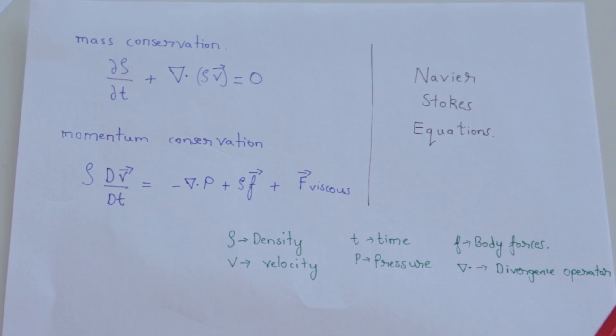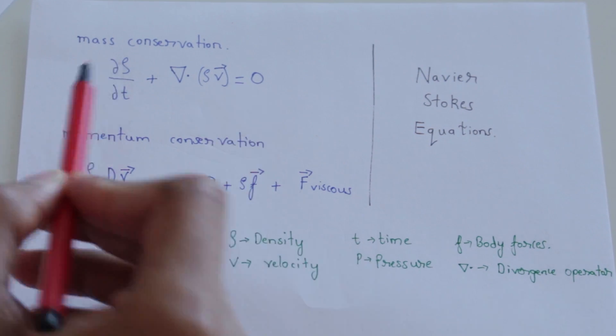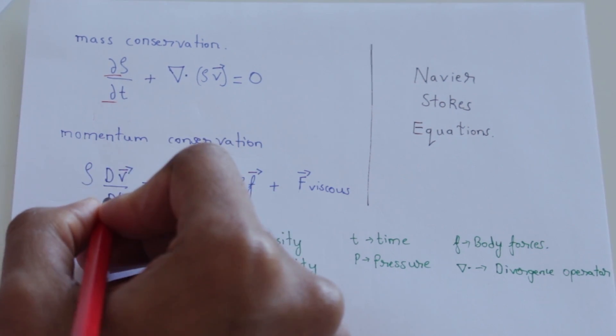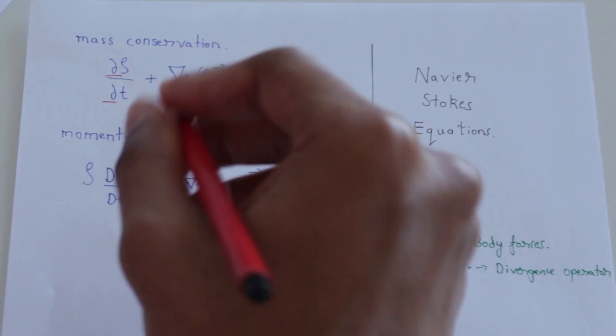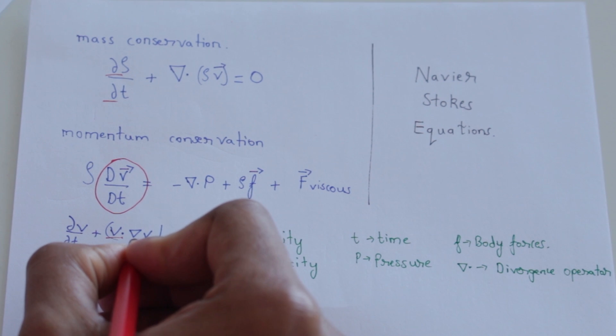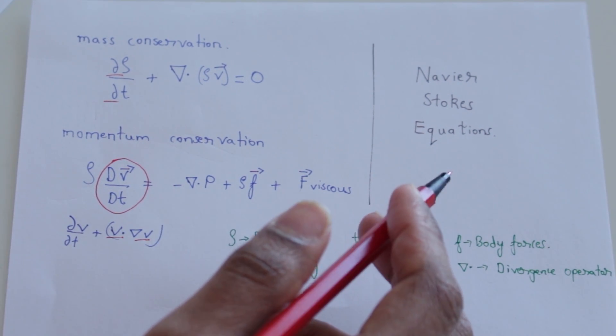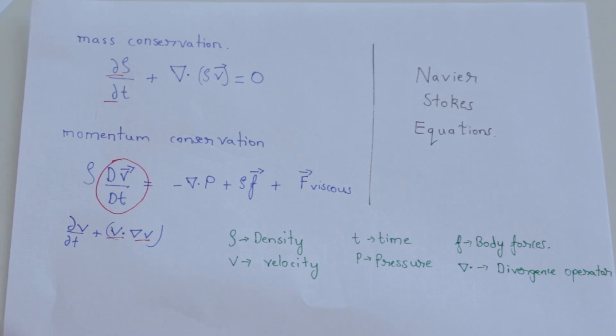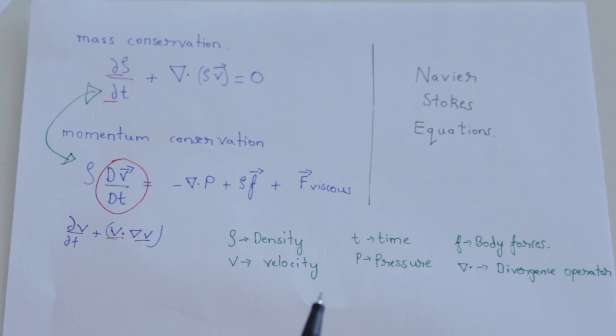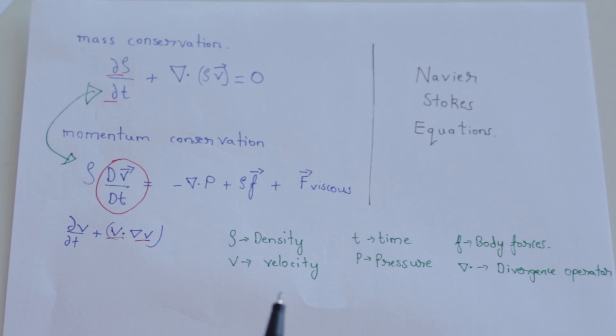Now there are some characteristics of these equations that you would observe just by looking at them. First, they are both partial differential equations. Now the momentum conservation equation, the term on the left hand side, can be expanded and written as, clearly you see that there are also some non-linearities in this equation. Another important characteristic of these equations is that both the mass and momentum equations are highly coupled, which means to solve any type of fluid flow, you need both the equations and you can't solve one without the other.